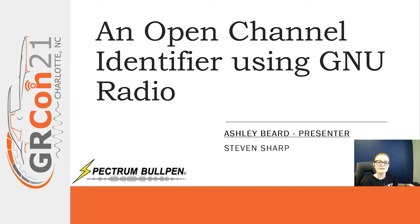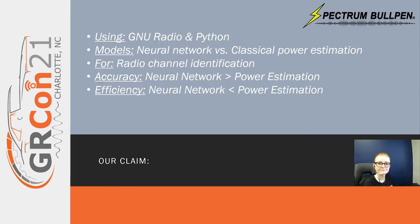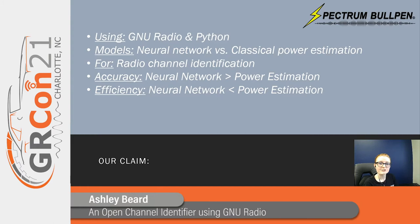To introduce this project I'll share our conclusive claim of the results we've achieved. Using GNU Radio scripts we modeled a neural network that differentiates between open and occupied radio frequency channels. We confirmed that this neural network is more accurate but less efficient than a classical power estimation algorithm, and is less accurate but more efficient than its neural network predecessors.